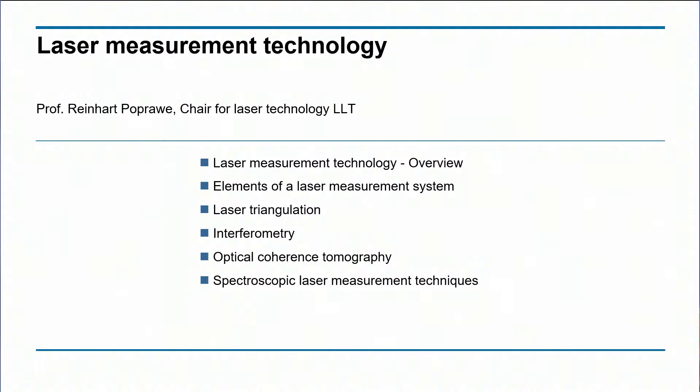The overview shows that in the beginning we will take a look at the measurement technology in general, then some elements of the system, and then we will go into some examples: laser triangulation, interferometry, optical coherence tomography, and some applications on spectroscopic laser measurement techniques where we will use very high intensity low energy pulses to vaporize nanograms of material, make them very hot and look at their spectroscopic behavior.